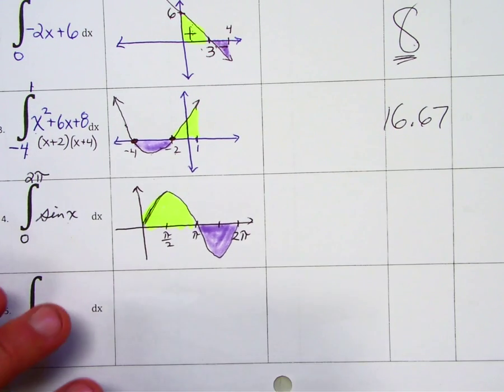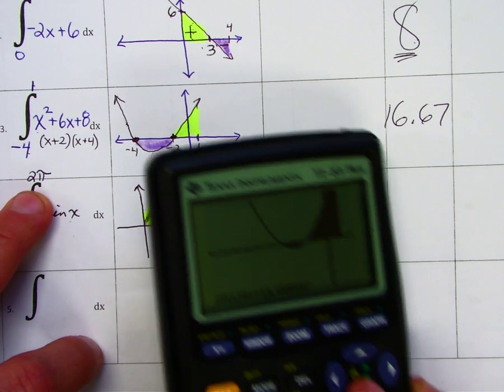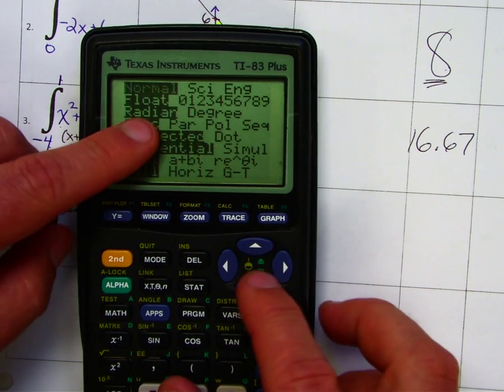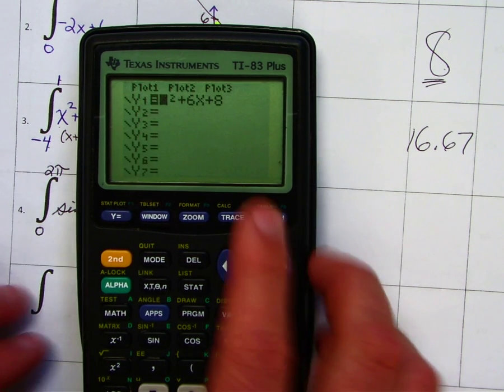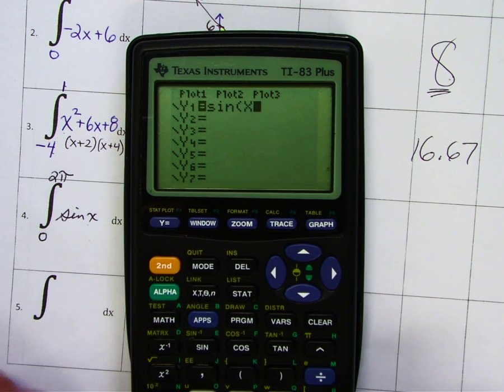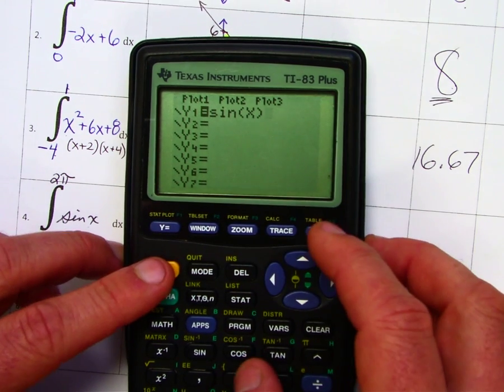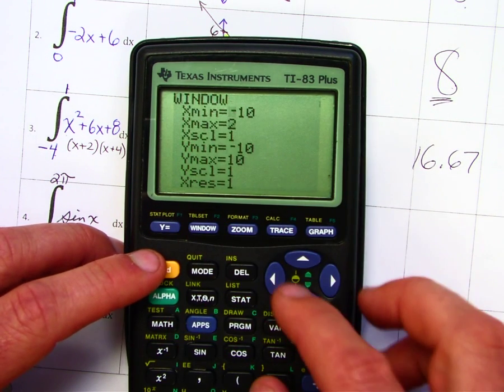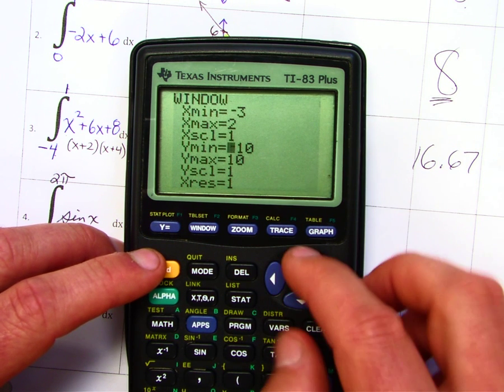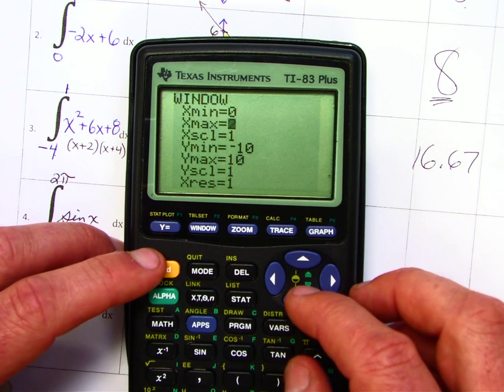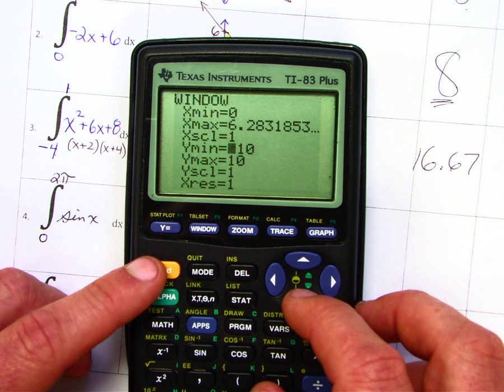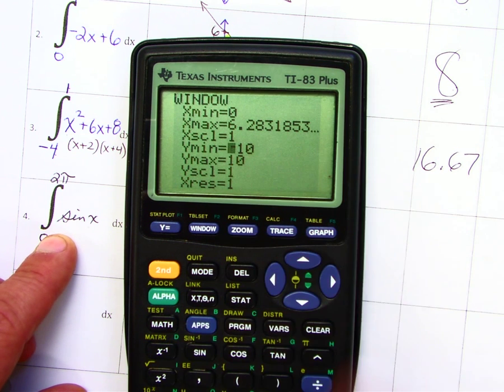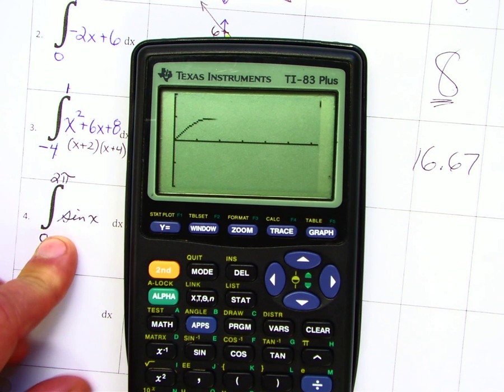And our last guy here for evaluating. This is a trig function. Notice the upper bound is in radians, so I have to change my calculator to radians. So if you go to mode, make sure it's in radian mode. And then I'm going to enter in my function, sine x. Now, depending upon my window, I change my window a little bit here. I'm going to change this to zero, and this to 2 pi. The amplitude of the function only goes up to 1, so I'm going to shrink this a little bit here so you can see it a little bit better.